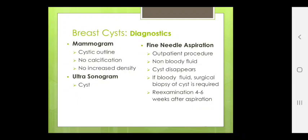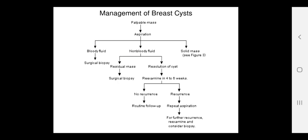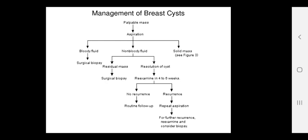Management of breast cyst: if palpable mass, aspirate — FNAC to be done. Bloody fluid — surgical biopsy. Non-bloody fluid — if residual mass, surgical biopsy. If resolution of cyst, re-examine after 4 to 6 weeks. No recurrence — routine follow-up. Recurrence — repeat aspiration; for further recurrence, re-examine and consider biopsy.